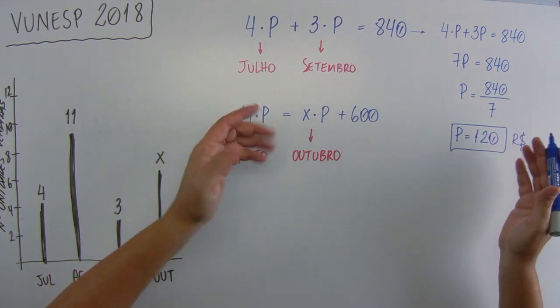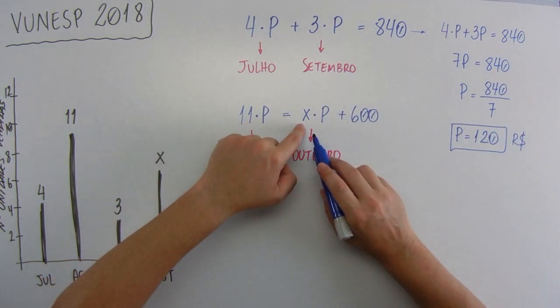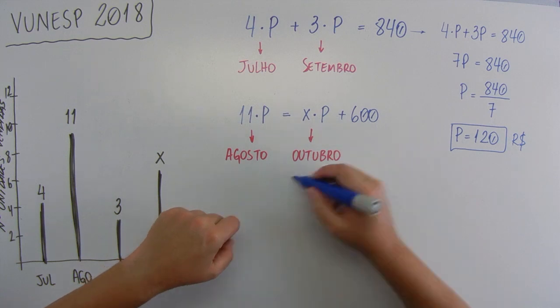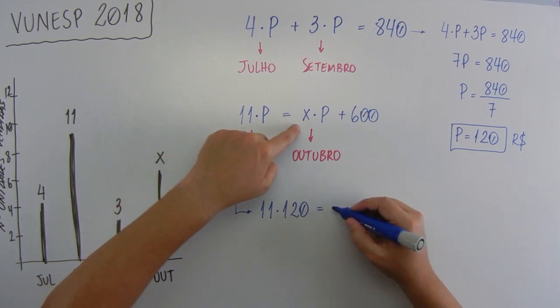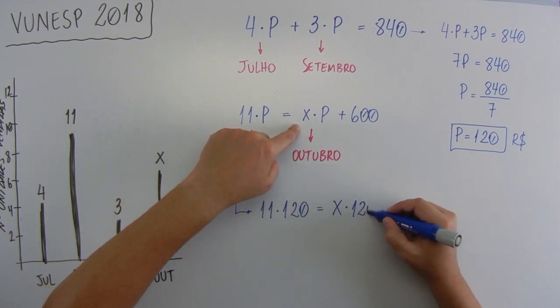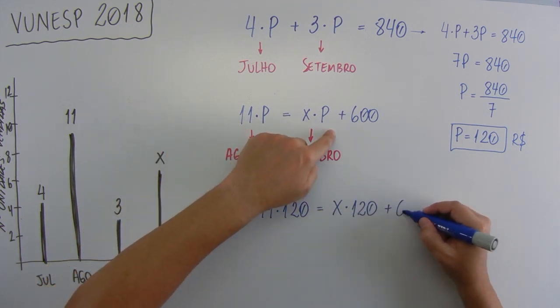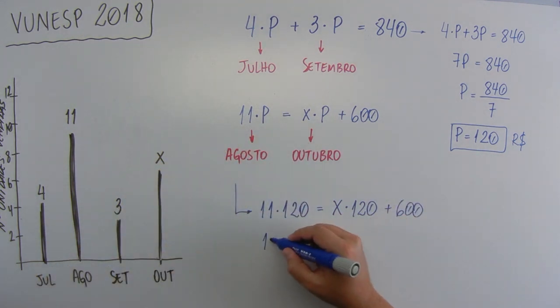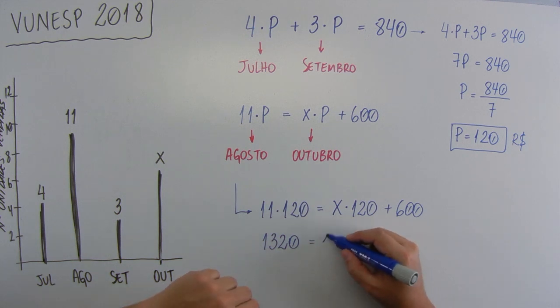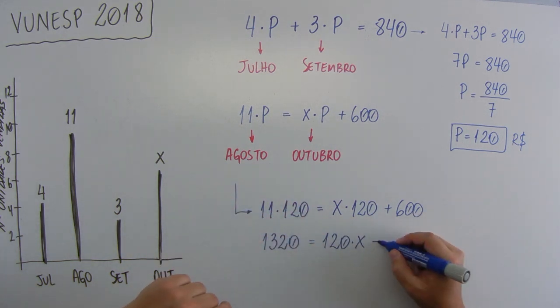Agora é só jogar o valor do produto aqui que a gente vai encontrar o valor de X. Vai ficar 11 vezes 120 igual a X vezes 120 mais 600. 11 vezes 120 vai dar 1320 igual a 120X mais 600.